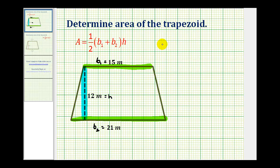Which means the area of our trapezoid is going to be equal to one-half times the quantity 15 meters plus 21 meters times the height of 12 meters.